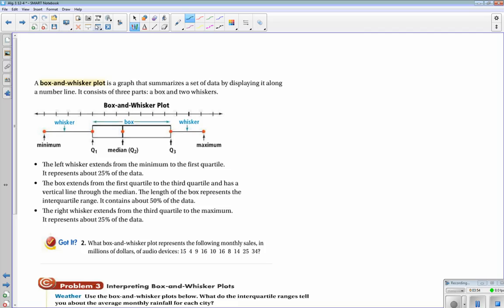Okay, so box and whisker plots. The box and whisker plot is a graph that summarizes a set of data by displaying along a number line. It has three parts: the box and two whiskers. How I roll it out is our box is comprised of our quartile one, our quartile three, and our median. These values make our box. And our whiskers are the values from quartile three to the max and from quartile one to the min.